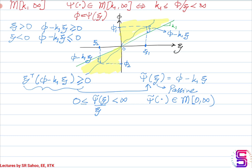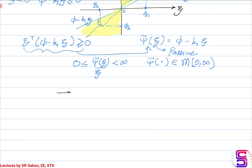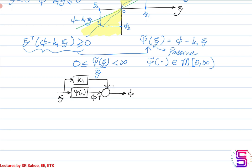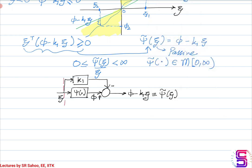Now how is the psi-tilde nonlinearity obtained from psi? What you have is xi going as input to the nonlinearity psi, which gives output phi. You then add a summing junction where a block k1 scales xi and subtracts it from phi, giving you phi minus k1*xi, which is psi-tilde. So psi-tilde is everything inside this dashed box, where the input is xi and the output is phi minus k1*xi. We will call this output phi-tilde.